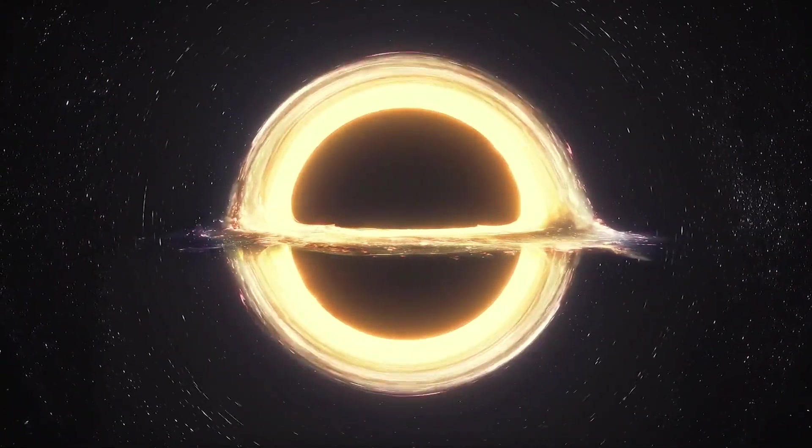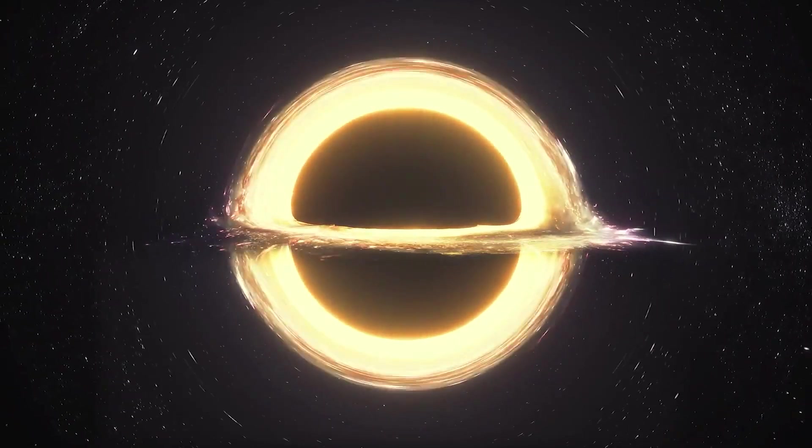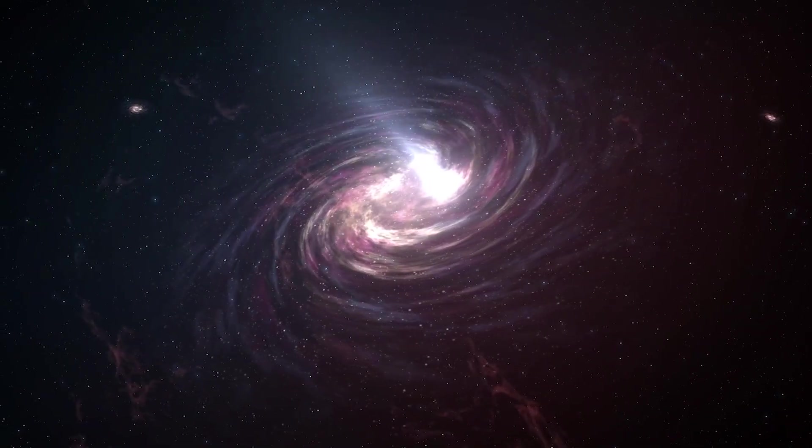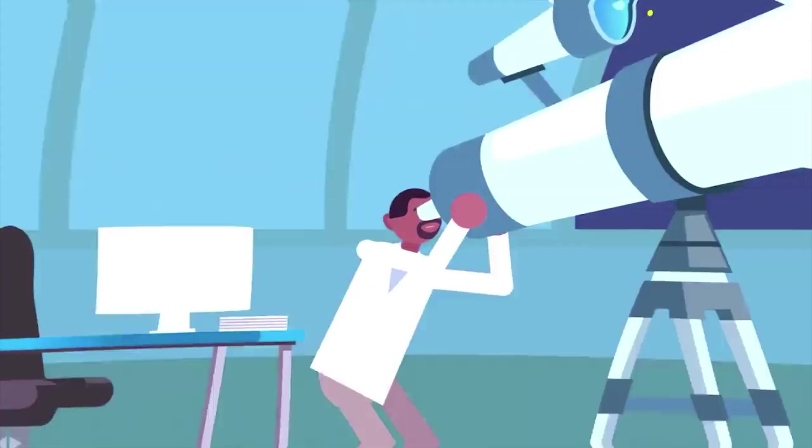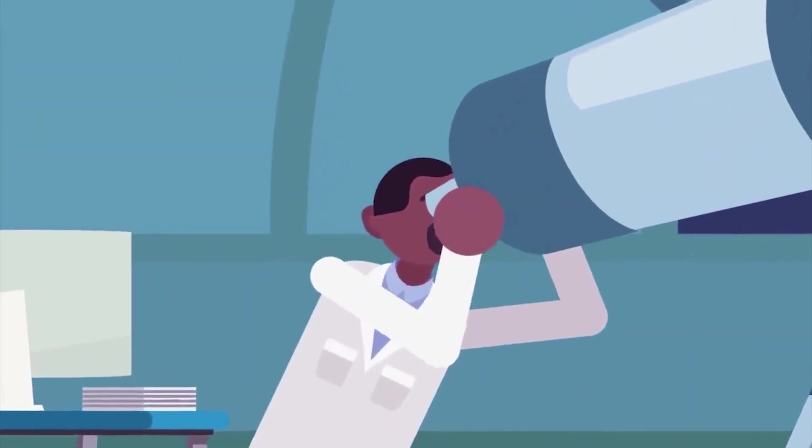The sun will never become a black hole, though, simply because it isn't big enough. Still, the sun will not exist as we know it forever. It is estimated that in millions of thousands of years, it will become a giant red star.